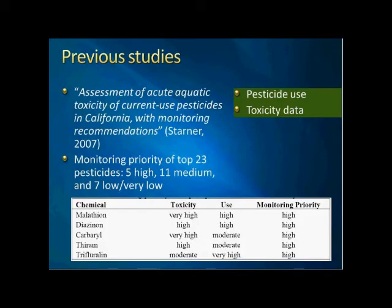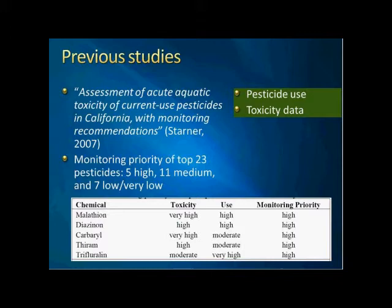This project is not brand new. We already have some previous studies by the surface water program. For example, in 2007, there was a report: 'Assessment of Acute Aquatic Toxicity of Current Use Pesticides in California with Monitoring Recommendations.' In that project, the authors used two major parameters — pesticide use and toxicity — to generate monitoring priority. The conclusion was that five chemicals were associated with high monitoring priority. During the literature review, I found that at least these two parameters are very important for prioritization, including pesticide use and toxicity data.